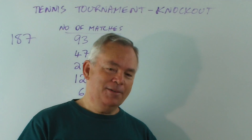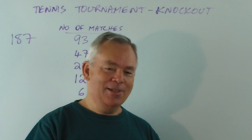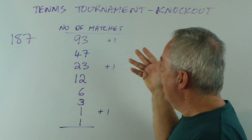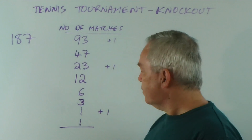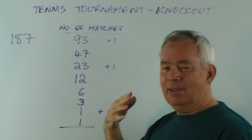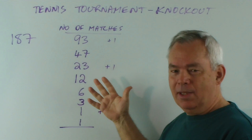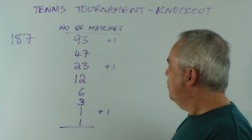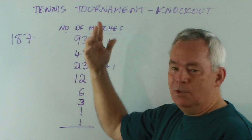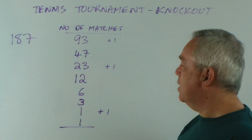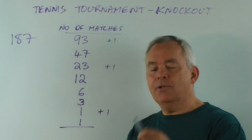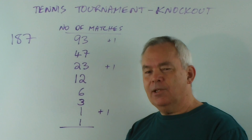Now before you add that up, let me ask a question that mathematicians ask: is there a simpler way? It's moderately complicated, and you can see that with big numbers like 2,174 this would take a while to do. Is there a shorter way? Yes there is.